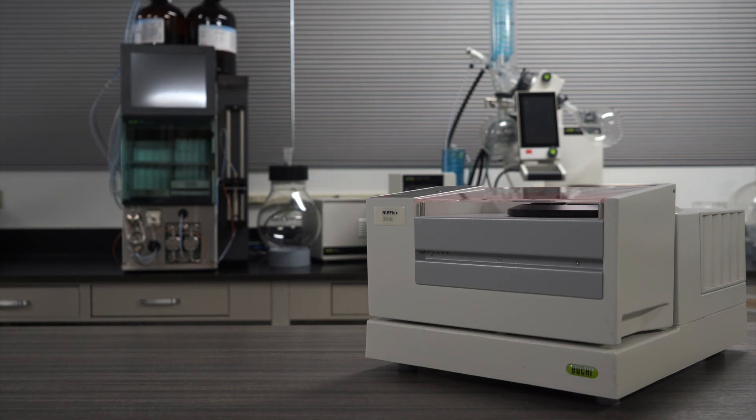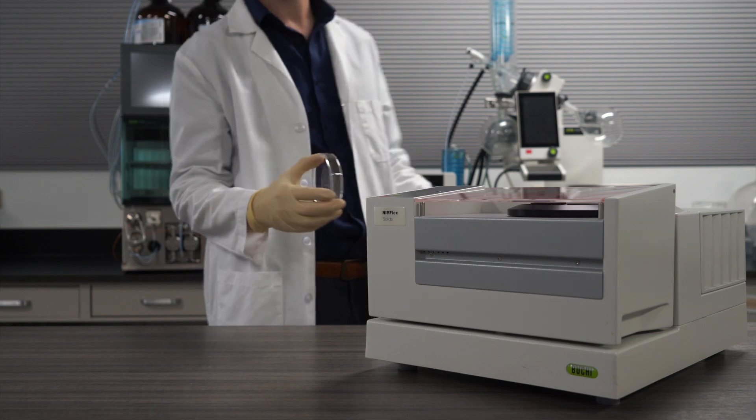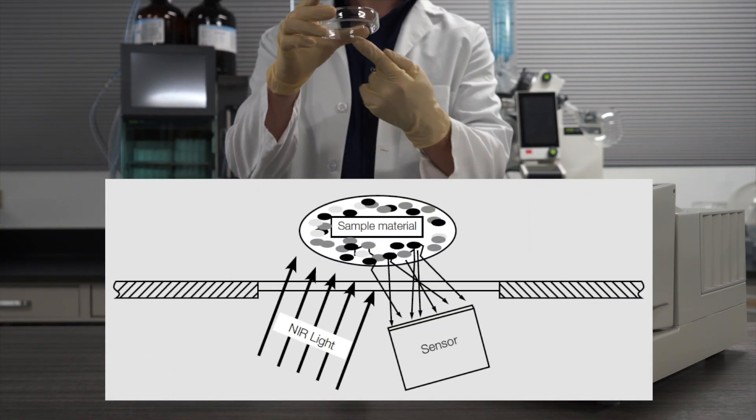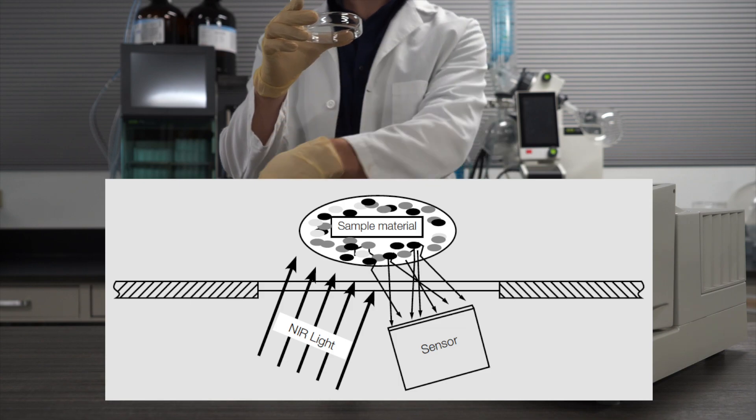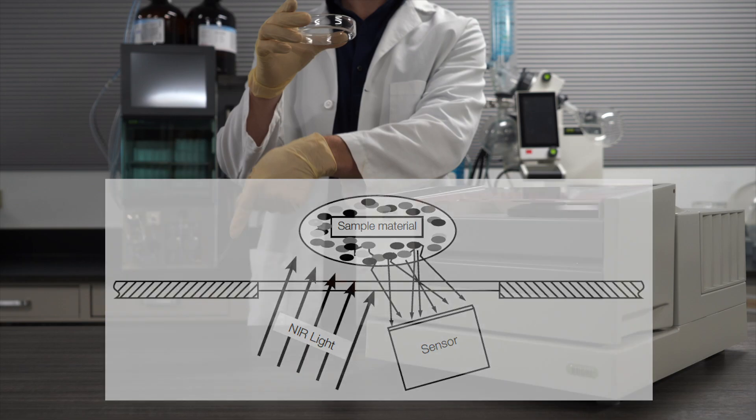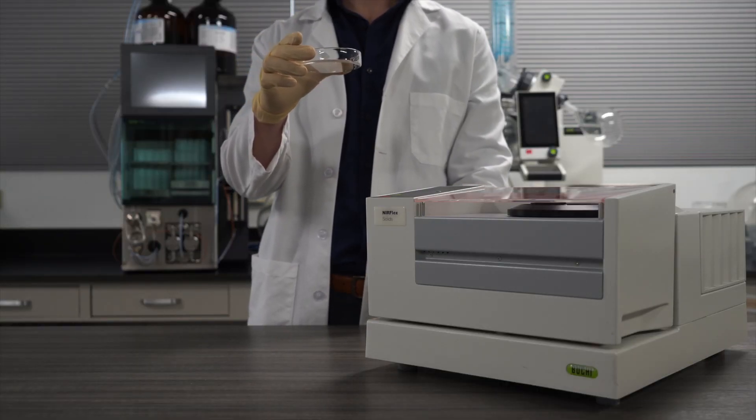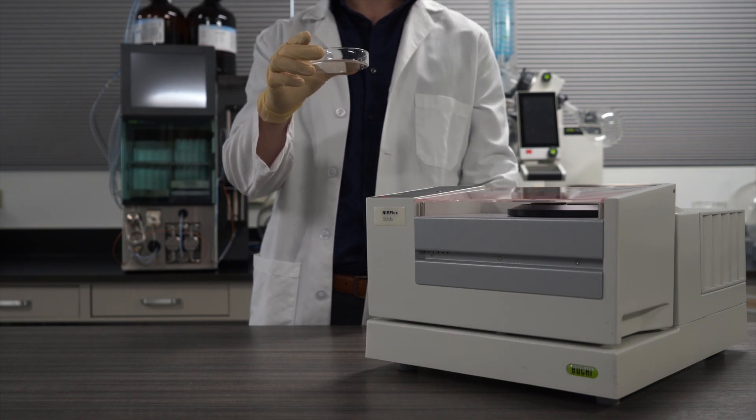With this module, we're working with diffuse reflectance. Simply put, the module works by directing light at the sample. The light gets scattered and absorbed by the sample, and some is reflected and captured by the detector. It is then processed and run through the calibration where it's turned into a sample measurement we care about, like sample identity.